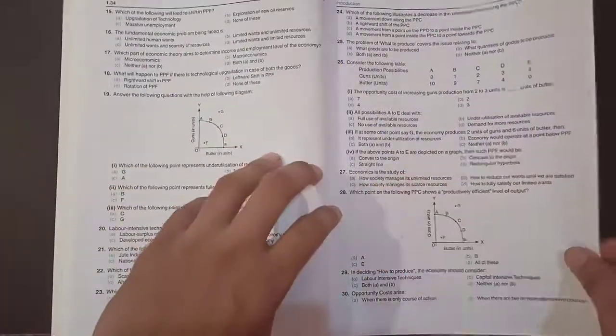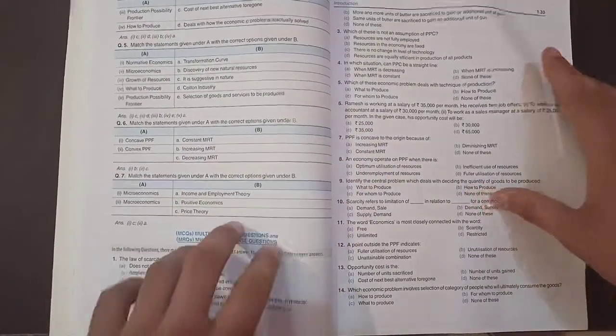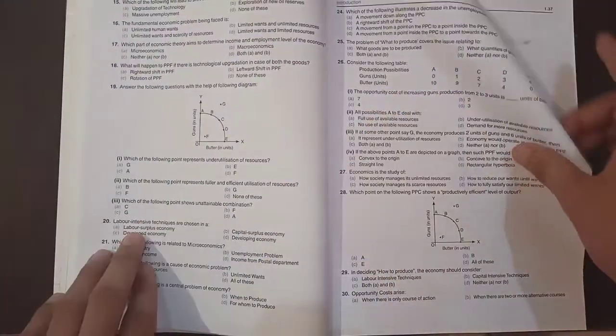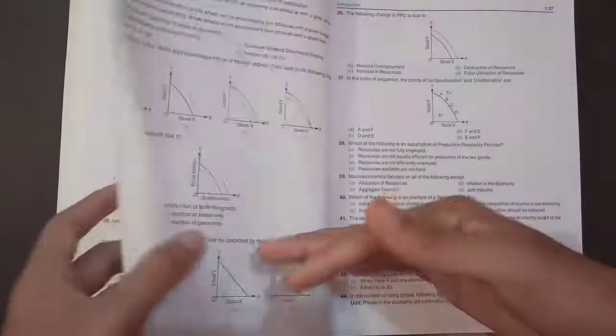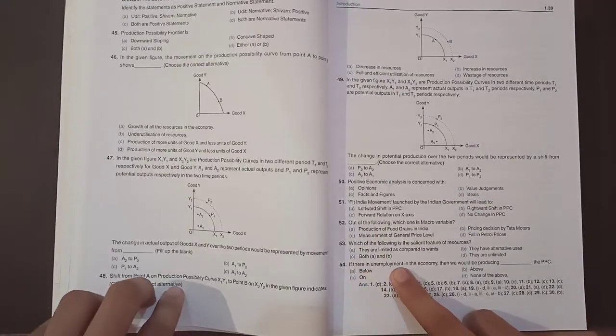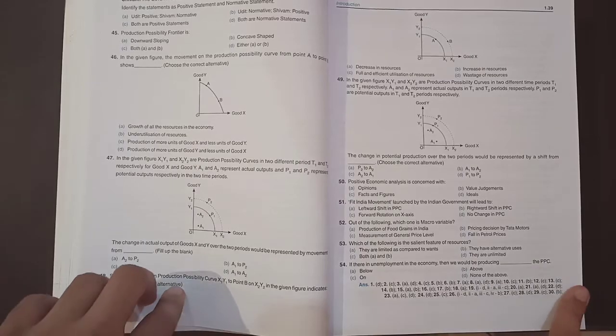For doing MCQs, you must have to read the theory of this book. Without the theory, you can do nothing. So there are MCQs. Finally, we have 54 MCQs, which is enough for your Term 1.